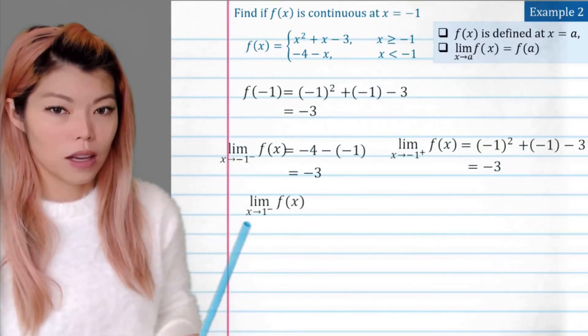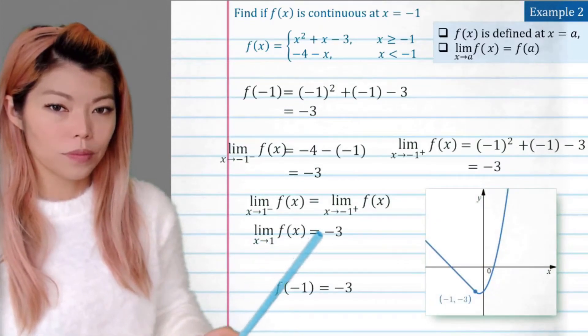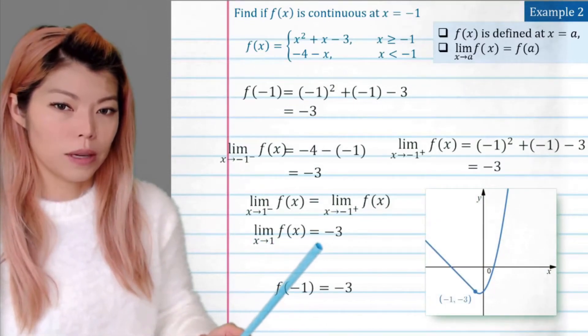So the left and right is the same. So we have a limit. So we have a limit and the limit is negative 3.